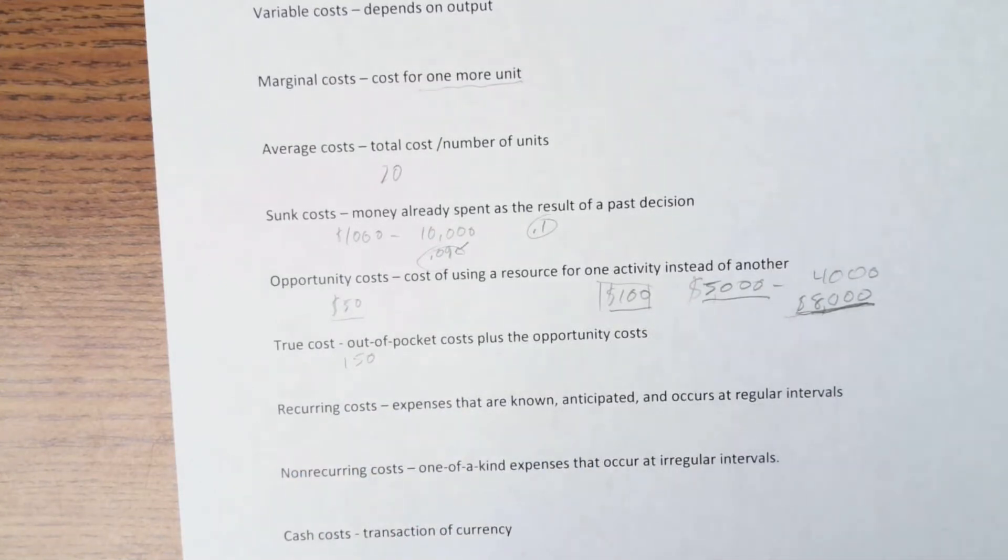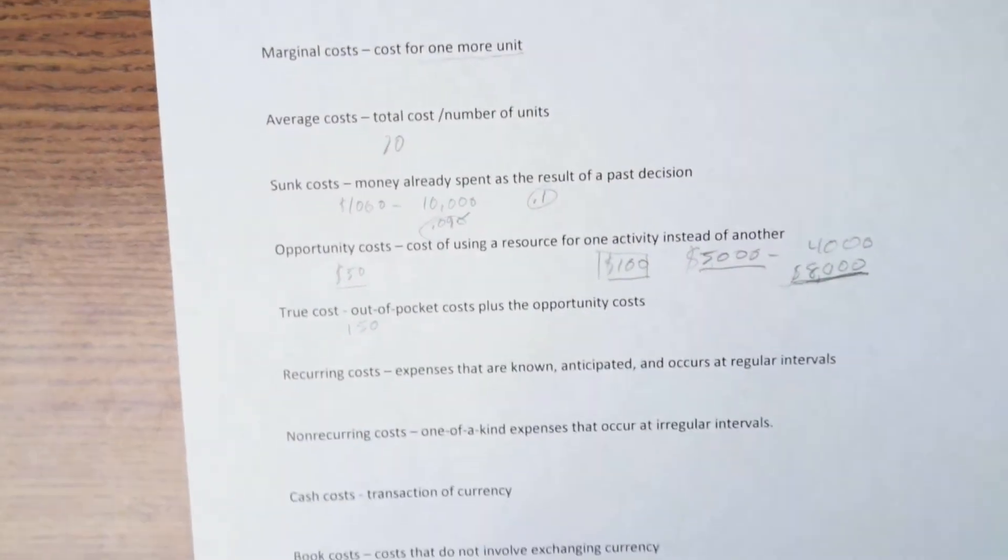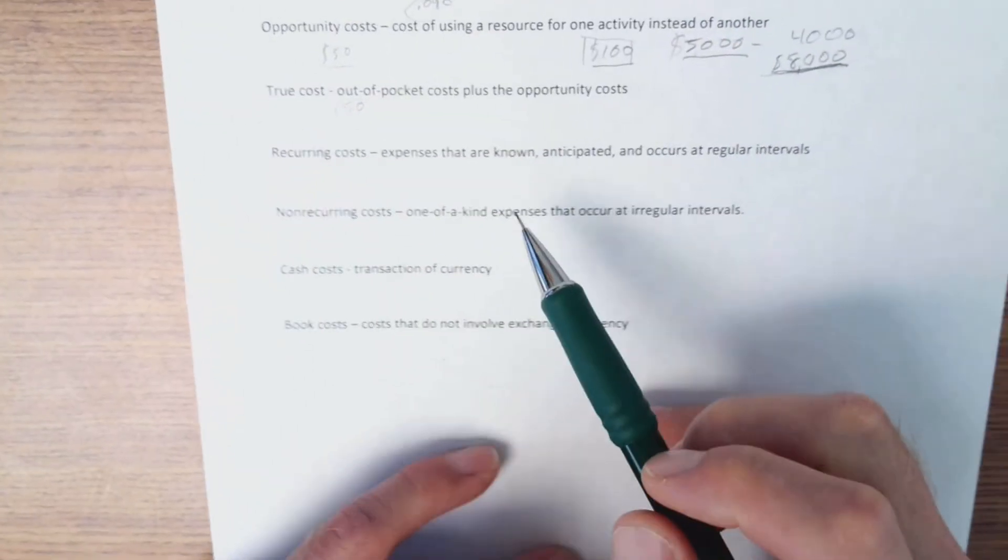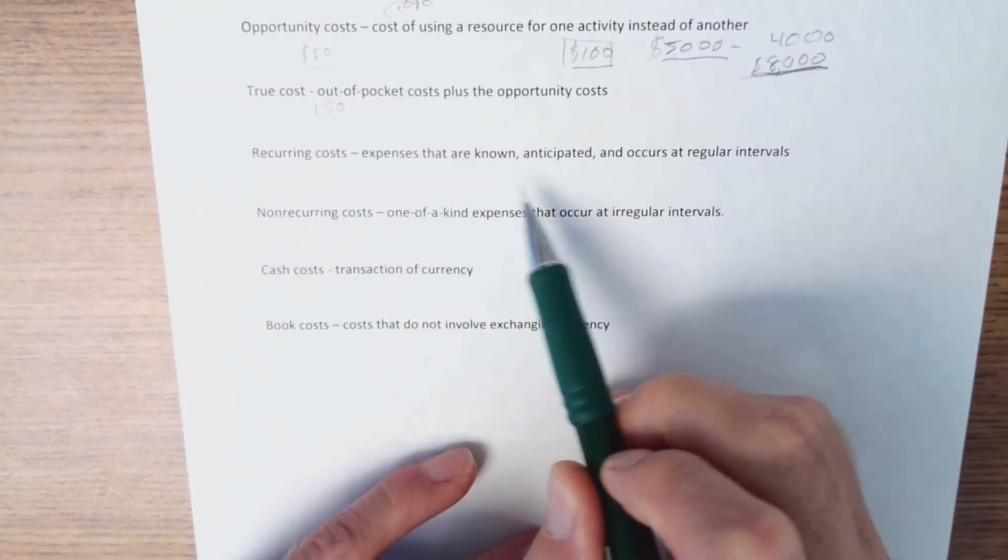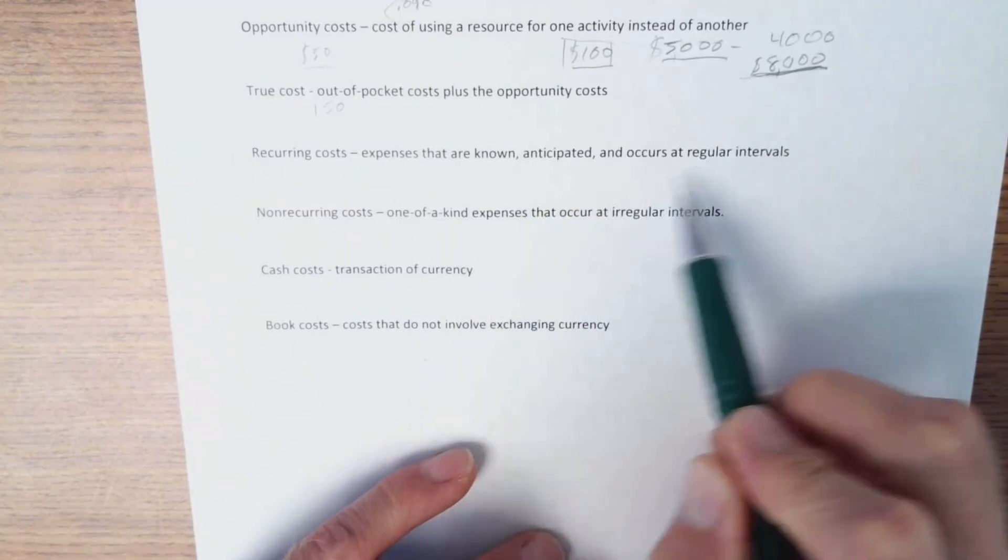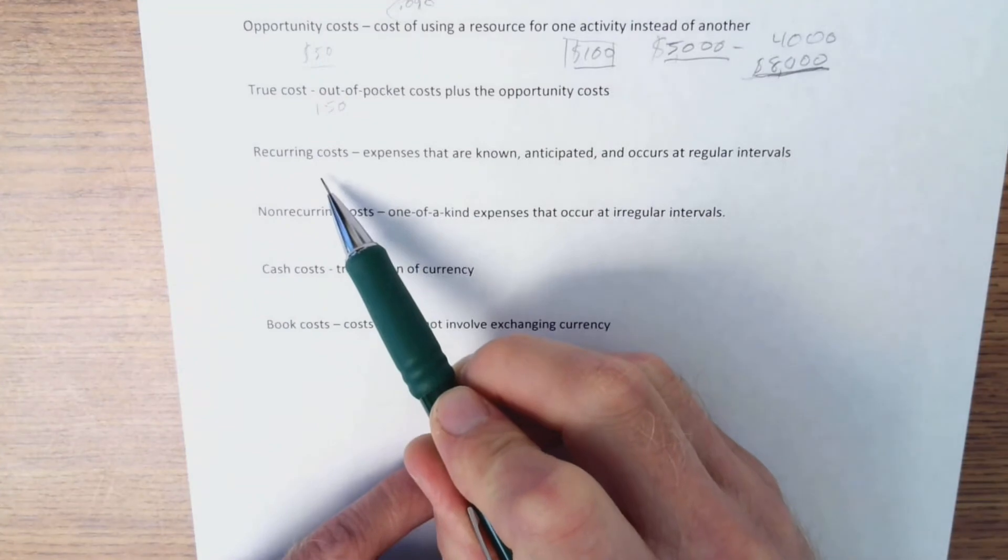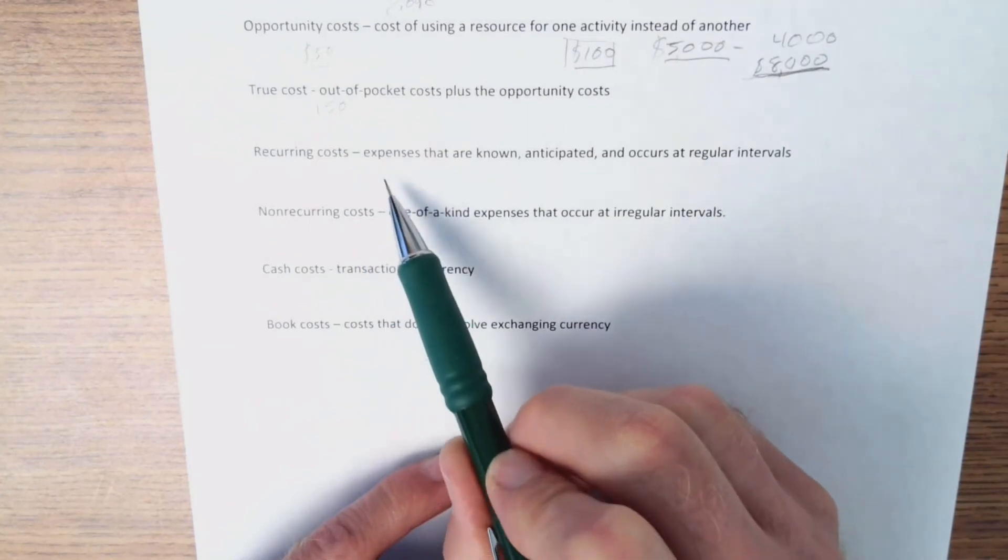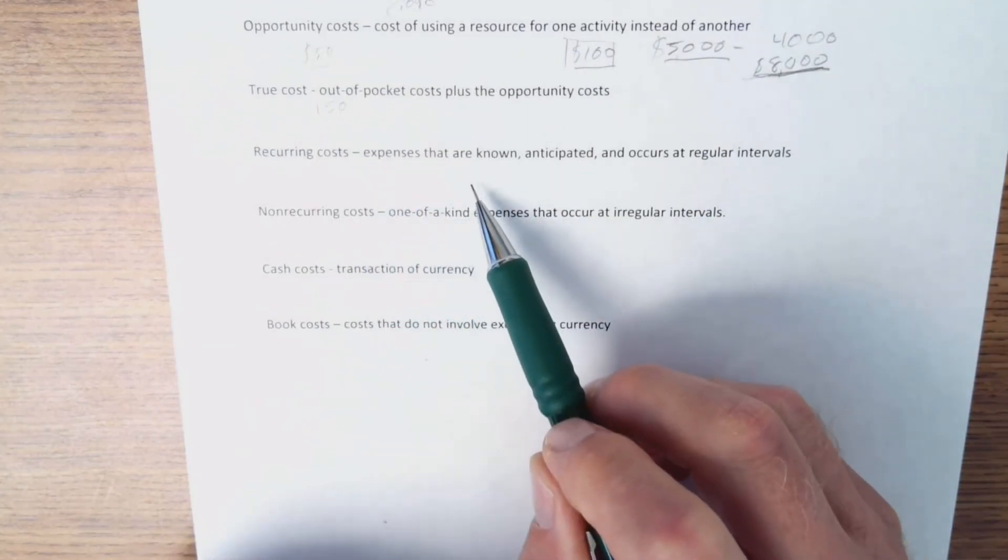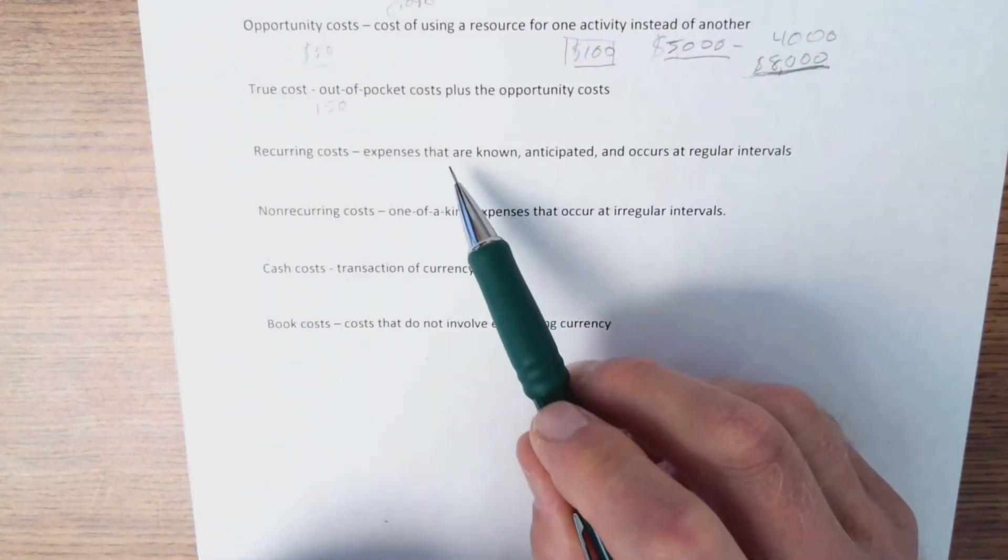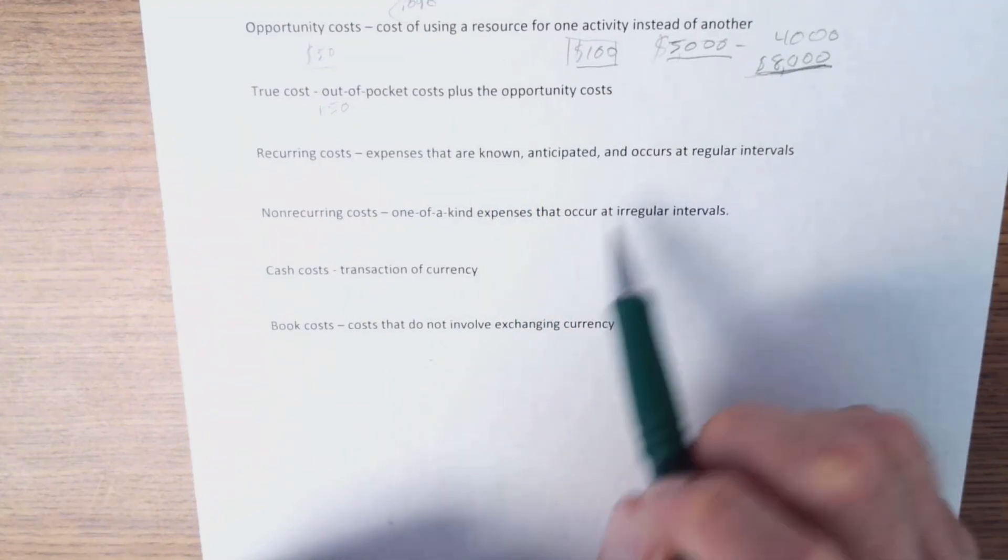Recurring costs are costs that are anticipated and known, and they occur at regular intervals. So, oil change on a car or a truck. A house has to be re-roofed every 20 years. New tires. Things like that are recurring costs we can plan for them.